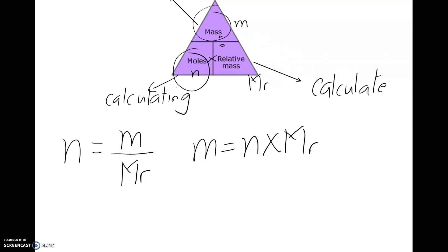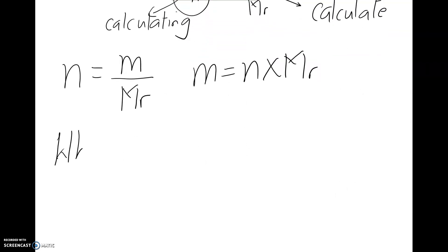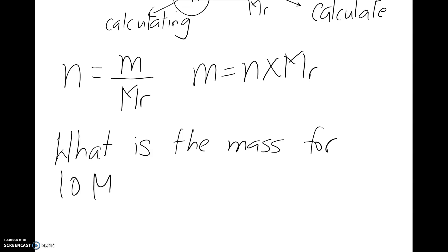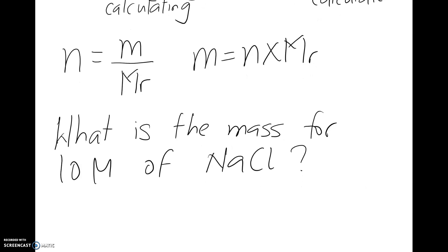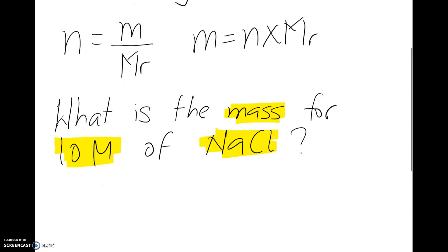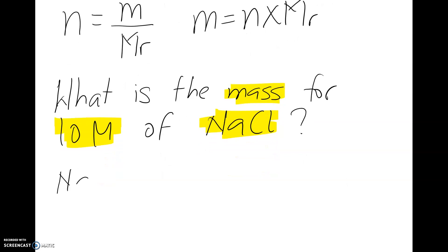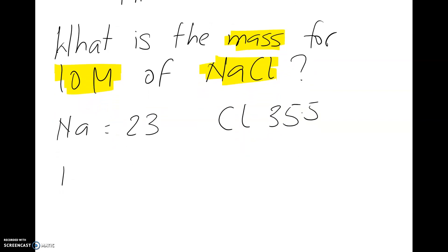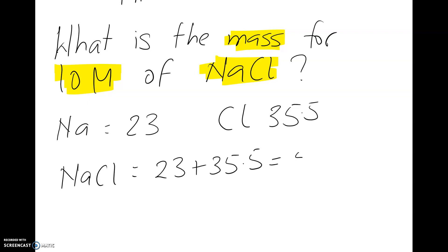So how do we use this in an exam scenario? Let's look at an example: What is the mass for 10 moles of NaCl? The first thing we need to do is work out the relative formula mass. Na is 23, Cl is 35.5 — both numbers can be found on your periodic table. With a ratio of 1 to 1, you add the two numbers.